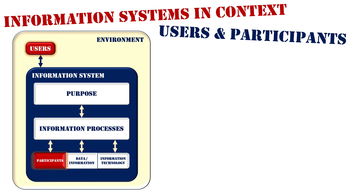The first thing that should stand out is if we look at the actual blue information system, we can see participants exist within the information system, whereas a user is outside in the environment. And through the arrows, we can see they interact with the information system. So that just illustrates that the participant is actually a part of the information system itself.